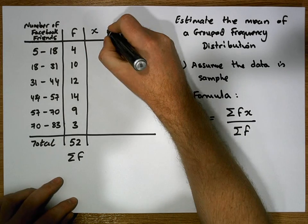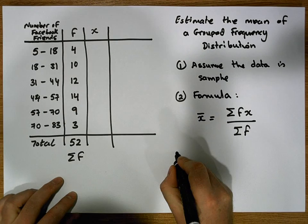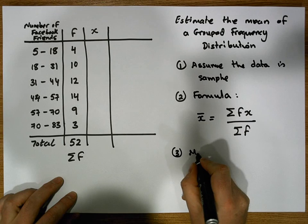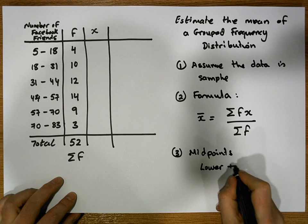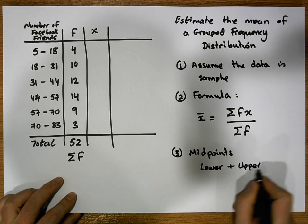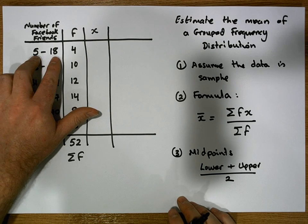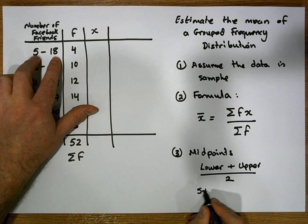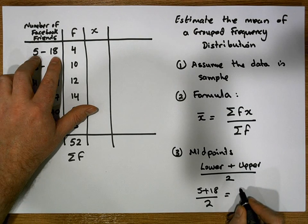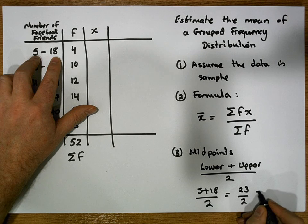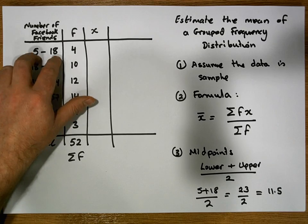Let's construct a column called x, which in our case is simply going to be the midpoints of each of our classes. To calculate the midpoints, we simply add the lower bound to the upper bound of the class and divide by 2. For example, the midpoint of the class with lower bound 5 and upper bound 18 will be (5 + 18) ÷ 2, which equals 23 ÷ 2, which equals 11.5.